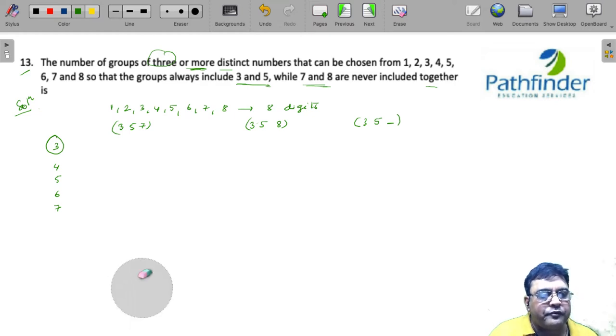If I need only a group of 3, I don't need to select anyone. I need only a group of 3. So, it will be 4C0. If I have to select a group of 4, I need to select only 1 from the remaining 4. Which are the remaining 4? 3, 5, 7 and 8 are gone. So, 1, 2, 4 and 6. So, out of these 4, I have to select 1.